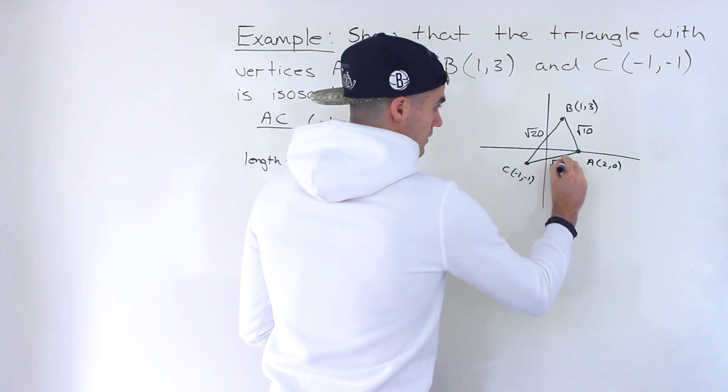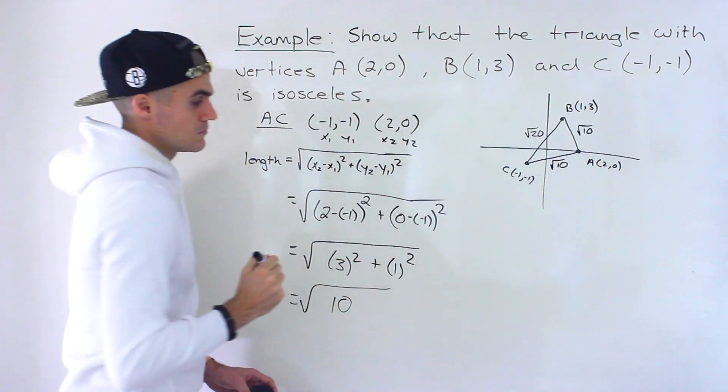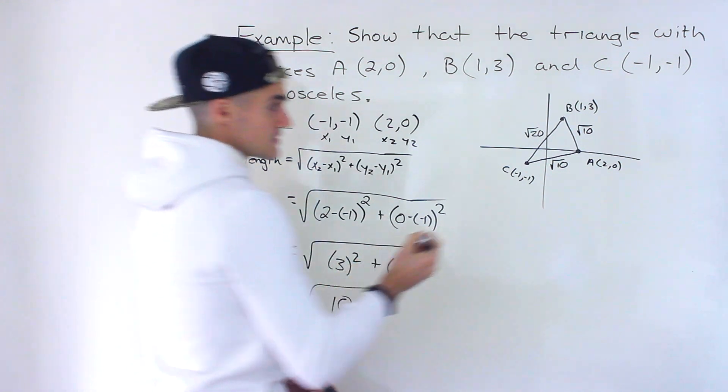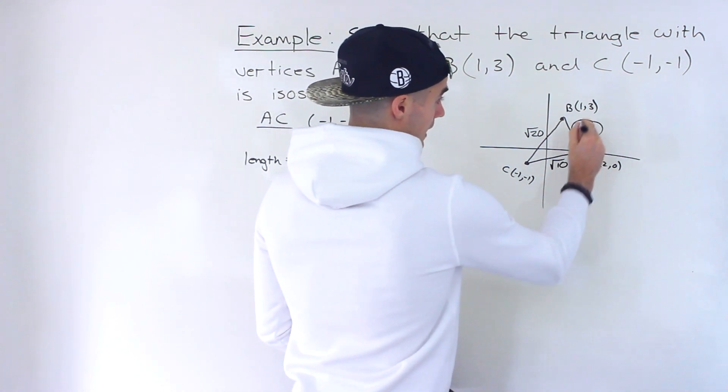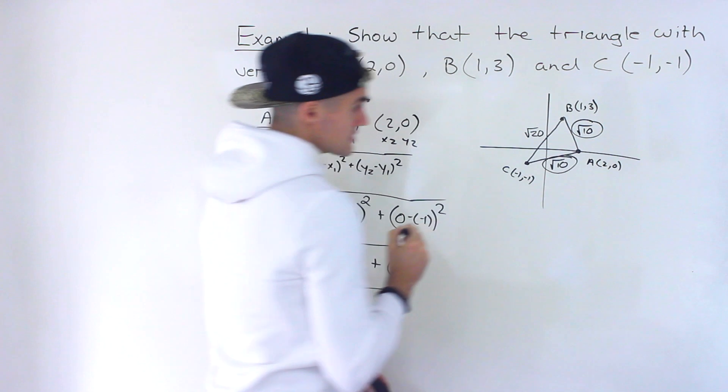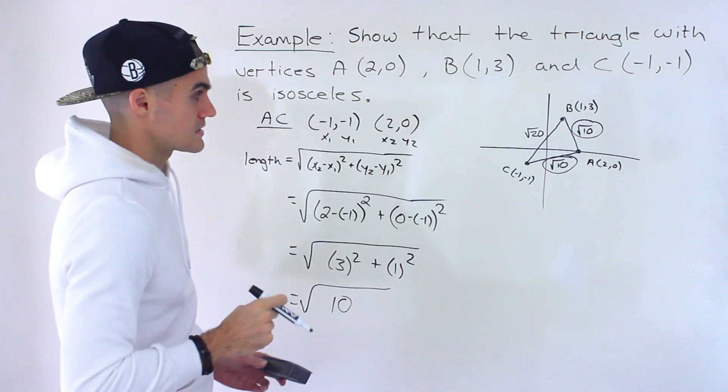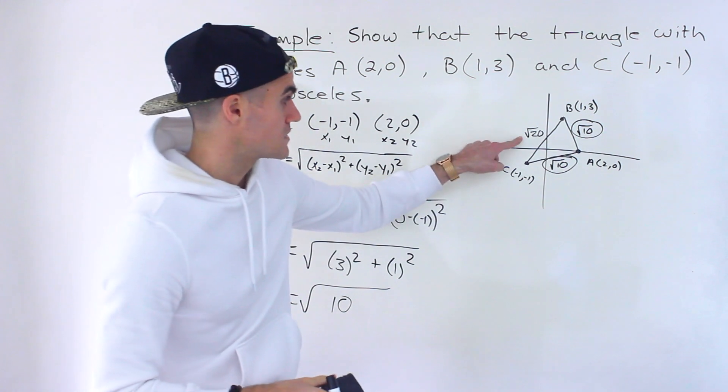Okay, so this here is going to be √10, the length of AC. And so notice the length of AB and the length of AC are the same, and so we proved that this triangle is an isosceles triangle, and then this length was different.